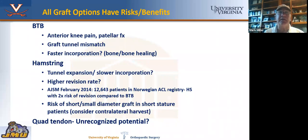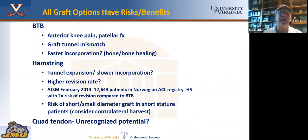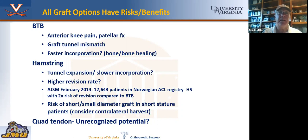The problem with patella tendon is there's a risk of anterior knee pain, particularly with squatting or kneeling, and if you're not careful, you can get a patella fracture. You can minimize that by packing bone graft into the harvest site and being careful with your harvest. You can also have a mismatch with the length of the tunnel. Patella tendon does incorporate better, and some studies have shown it's a little bit tighter of a graft — that's why we like it in young people. Bone-to-bone healing, which you get with the patella tendon, is also a positive thing.